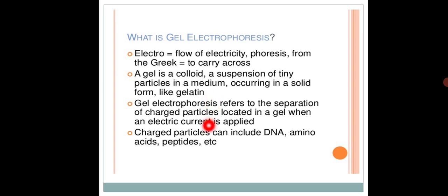Gel electrophoresis refers to the separation of charged particles located in a gel when electric current is applied. When we apply the electric current, there is movement of charged particles. Agarose gel electrophoresis is used to separate charged molecules like DNA, RNA, amino acids, peptides, proteins, etc.